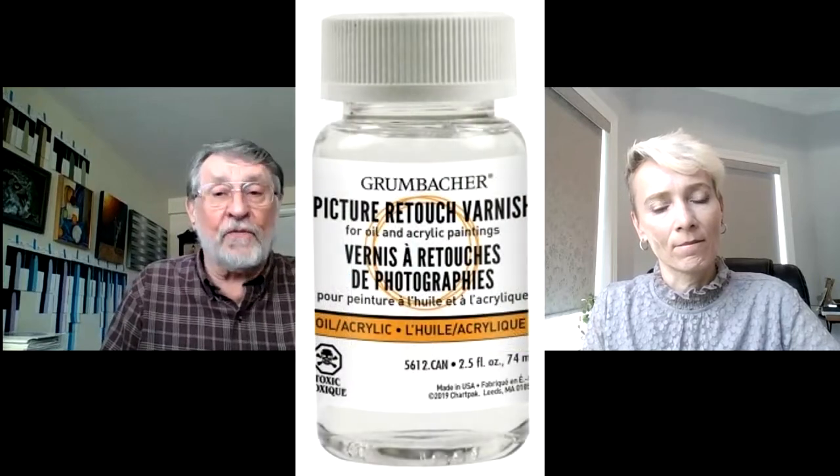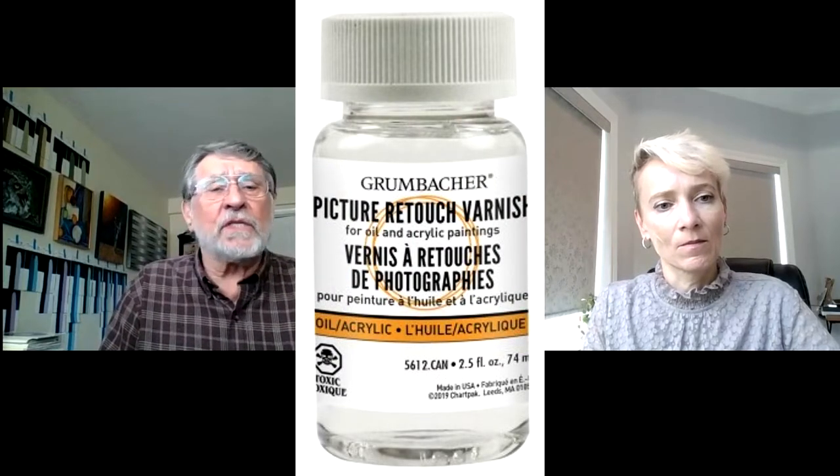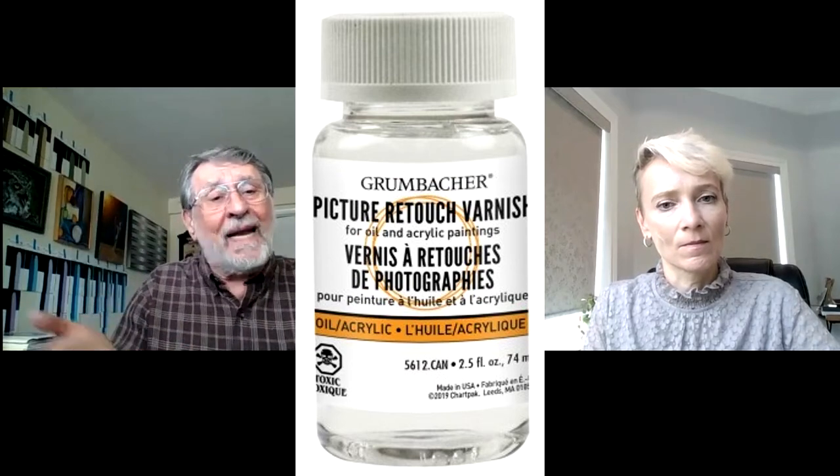Artists should wait at least six months to apply a final varnish to an oil painting — that's true. For a final varnish, you do want to wait that long. In the meantime, you can use what's called a retouch varnish — it's like taking a picture varnish and diluting it in about a four-to-one mixture of mineral spirits. It's mostly solvent with a little bit of resin. It evens out the sheen of the painting and protects it until you can do the final varnish.